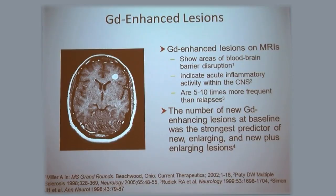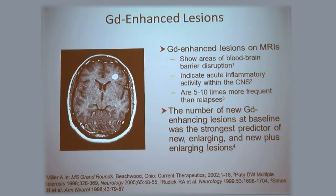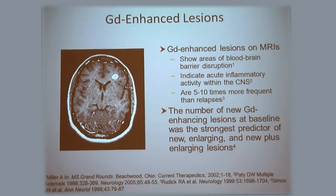The number of new gadolinium-enhancing lesions is a very strong predictor of future disease activity. So if somebody shows up with a new diagnosis of MS or with an exacerbation and you see a lot of gadolinium-enhancing lesions, you really want to think hard about taking strong action because it means there's a lot of disease activity going on.